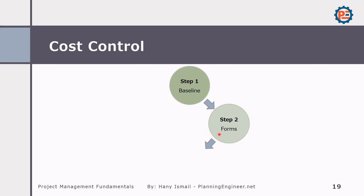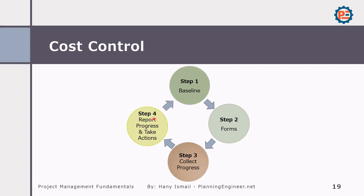The baseline here means an Excel sheet containing project BOQ items linked to the project activities, with direct costs and indirect costs so you can monitor easily. These forms help you fill in the fields where you collect progress, then report progress and take actions. It is a very simple process once you understand how it works.